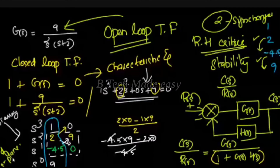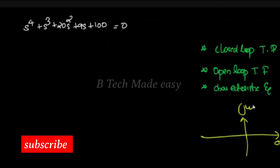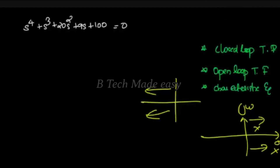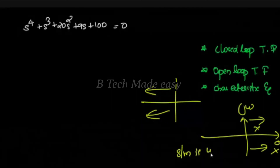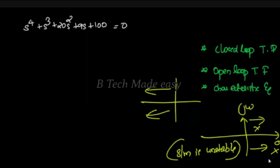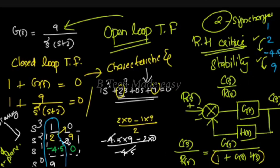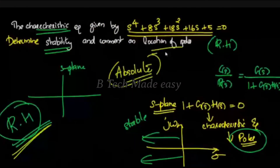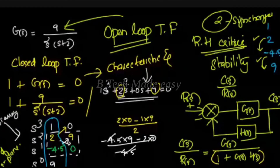It has two roots. This is sigma and this is j omega. Two sign changes indicates 2 roots lie on the right half of the plane. If there is no stability, it has two poles in the right half. There are 2 roots on the right half of the plane and one on the left, so the system is unstable.